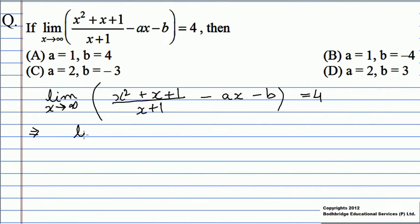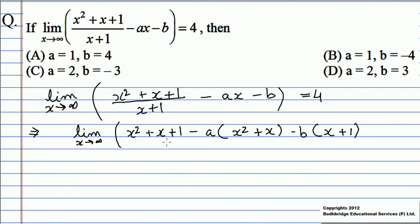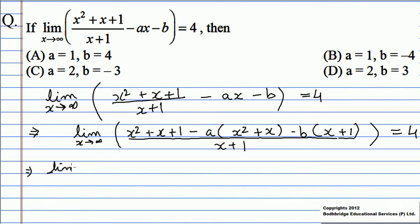Solving this, we get the limit as x tends to infinity of [x² + x + 1 - a(x² + x) - b(x + 1)] upon (x + 1) equals 4. Which implies the limit of [x²(1 - a) + x(1 - a - b) + (1 - b)] upon (x + 1) equals 4.